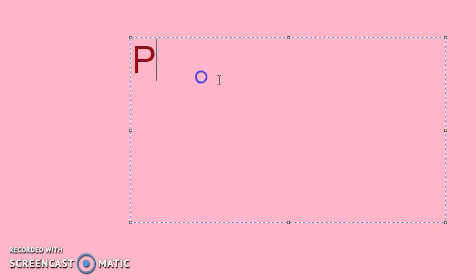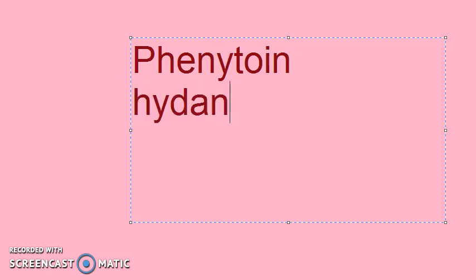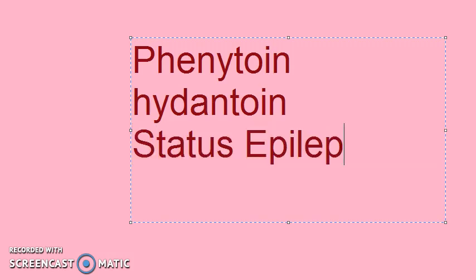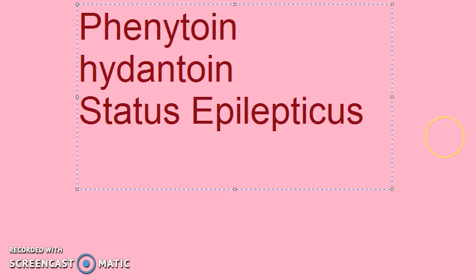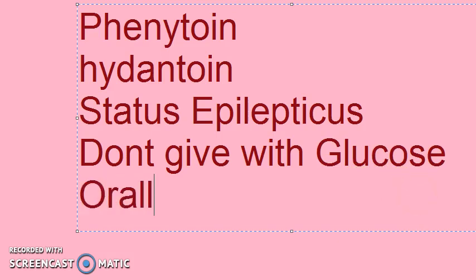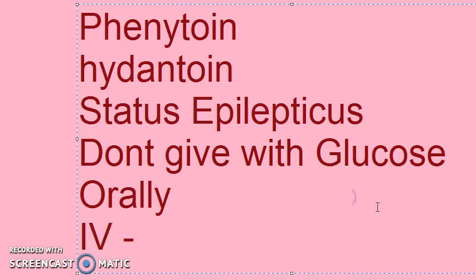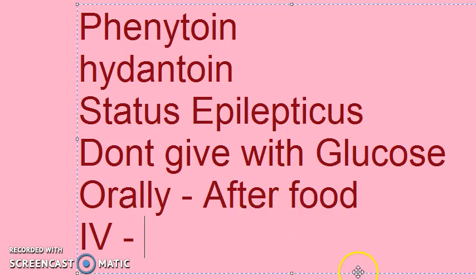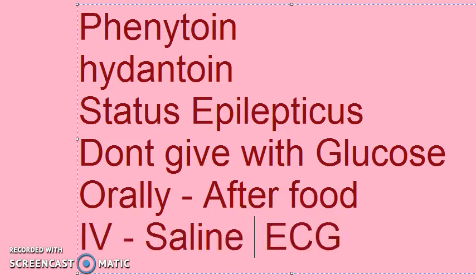Summary of what we learned: Phenytoin is a hydantoin chemically. It is used as first line of treatment in status epilepticus when given with benzodiazepines. When giving phenytoin IV, don't give it in glucose — give only in saline. You can give it orally; whenever you give it orally take it after food. When giving IV, you have to monitor ECG, because it can cause vascular complications.